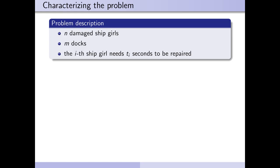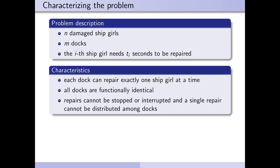Ok, now onto the central characteristics. Each dock can repair exactly one shipgirl at a time. The docks are functionally identical, this means all docks repair the shipgirls at the same speed. Finally, repairs cannot be stopped or interrupted and a single repair cannot be distributed among multiple docks. Once a repair has been started, the dock in question is busy until that repair is finished.